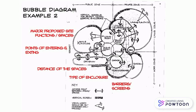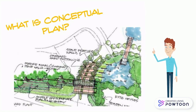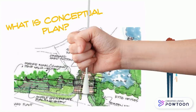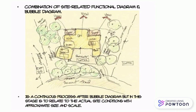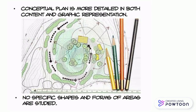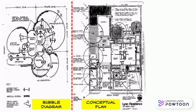This is a bubble diagram example. Secondly, we also need to understand what is a conceptual plan. Conceptual plan is a combination of site-related functional diagram and bubble diagram. Conceptual plan is more detailed in both content and graphic representation. This is the graphic differences between bubble diagram and conceptual plan.